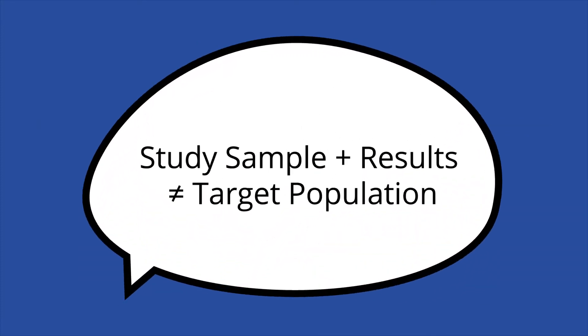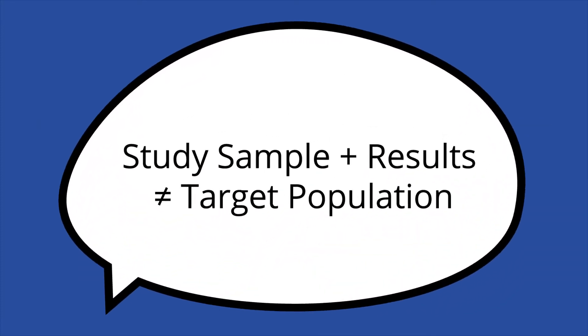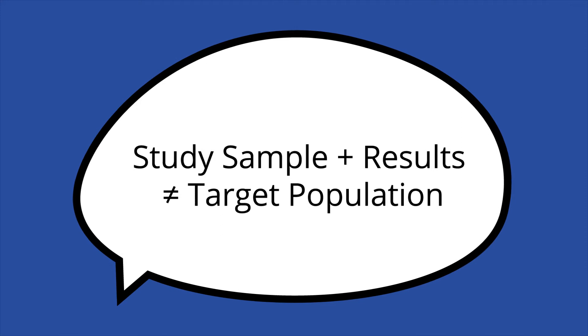Selection biases are usually labeled as a limitation of a study. These biases don't only occur in psychological studies — studies and experiments in any field are subject to selection biases and inaccuracies.